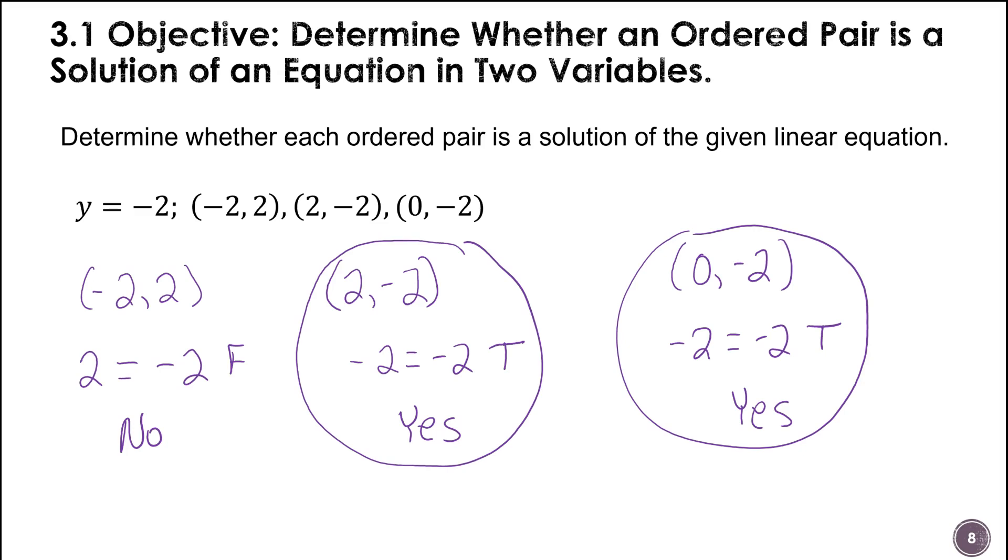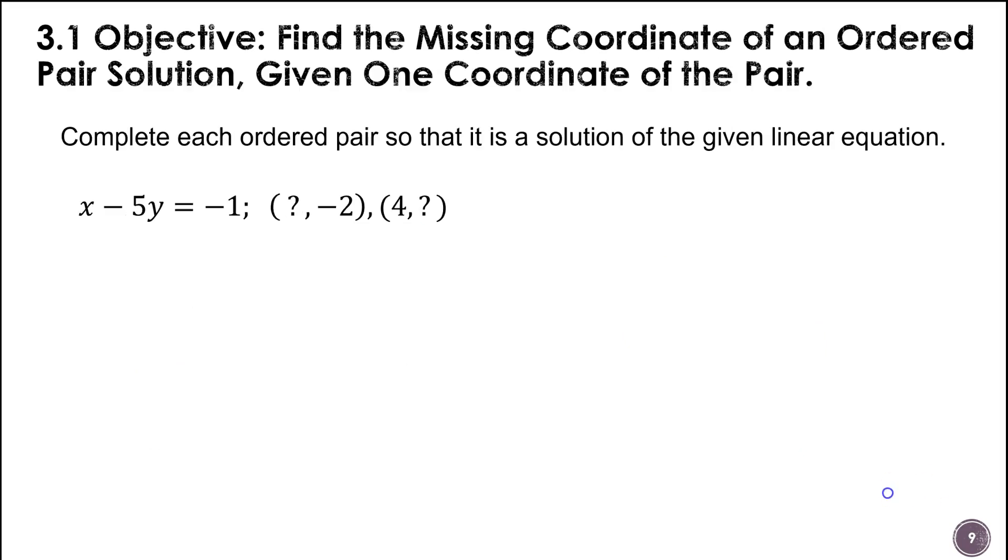So this ordered pair and this ordered pair are both solutions. And because these are lines, you can have an infinite number of solutions. You can just go on and on and on with this.